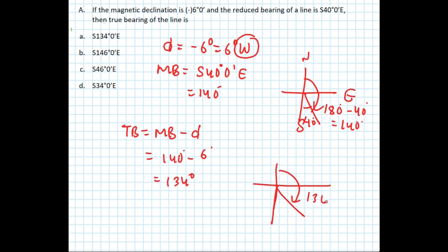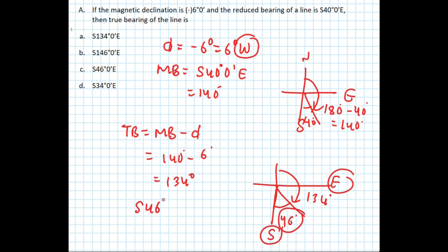Since 134 degrees is in whole circle bearing, we convert to quadrantal: 180 minus 134 equals 46 degrees. This is in the south-east quadrant, so the answer is south 46 degrees east. Option C is the answer.